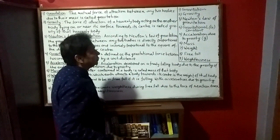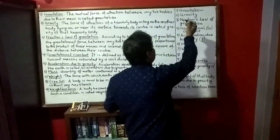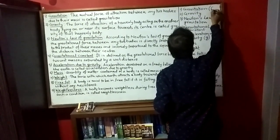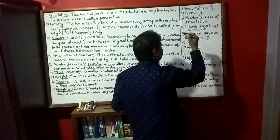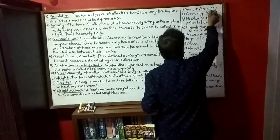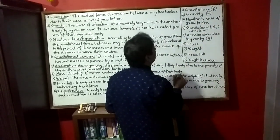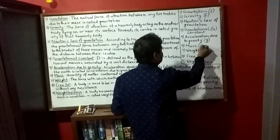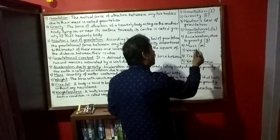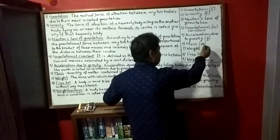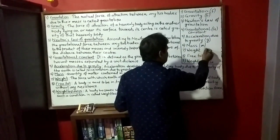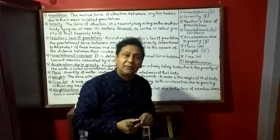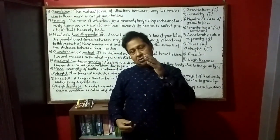Now I want to focus on the symbols. Gravitation and gravity are both forces, so they are denoted by the symbol F. Mass is denoted by small m; for the mass of Earth or another large heavenly body, we use capital M. Weight is also a force, denoted by W. These are the important definitions related to the chapter on gravitation.